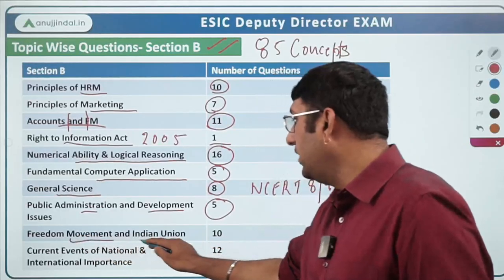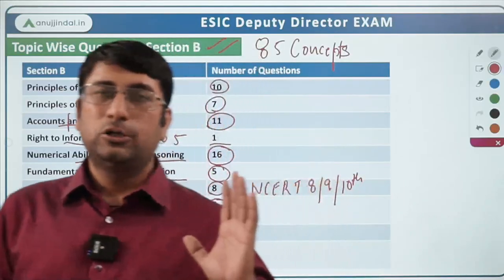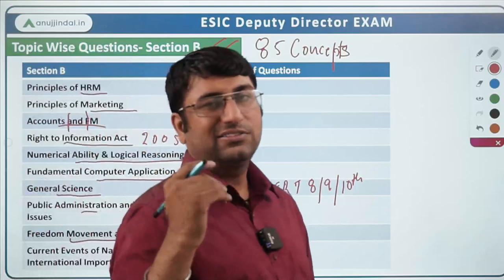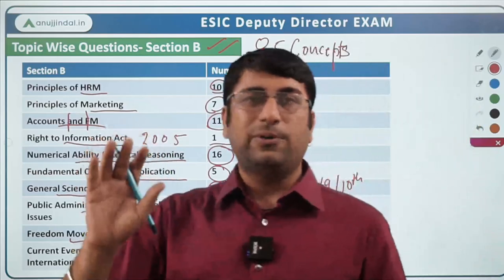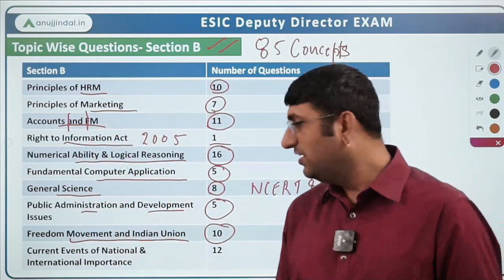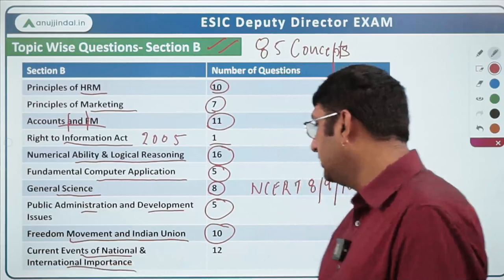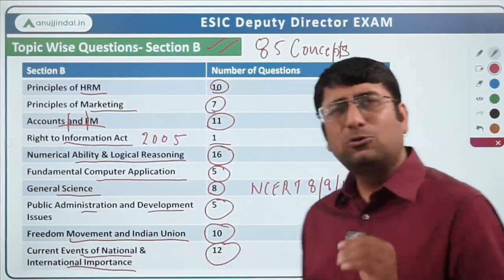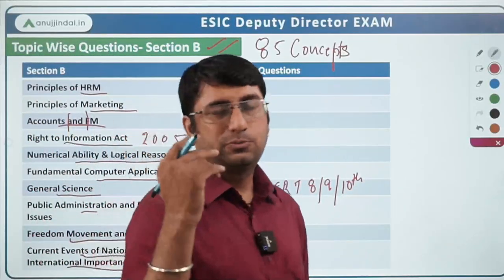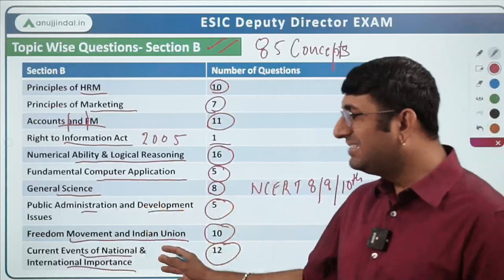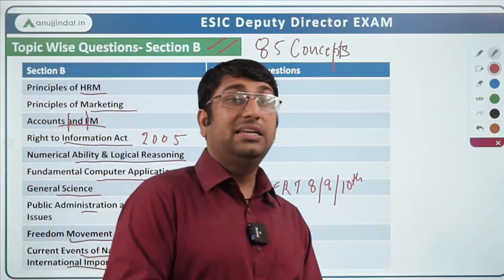Next is Freedom Movement and Indian Union — 10 questions were asked, a very good weightage covering entirely the history section. Those with some interest or background in history will find this manageable. This section also covers current affairs. If you are following Spotlight or preparing with Spotlight, this section can be entirely covered through it. Neha ma'am has been doing a fantastic job compiling Spotlight on a monthly basis and providing updates.